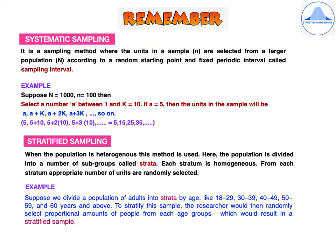Systematic sampling is a method where units in a sample are selected from a larger population according to a random starting point and a fixed periodic interval called the sampling interval. The sample size is denoted by small n and the population size by capital N. For example, if N = 1000 and n = 100, then K = 10. Select any starting number A between 1 and K. If A = 5, the units selected are A, A+K, A+2K, A+3K, and so on — that is, 5, 15, 25, 35, and so on.